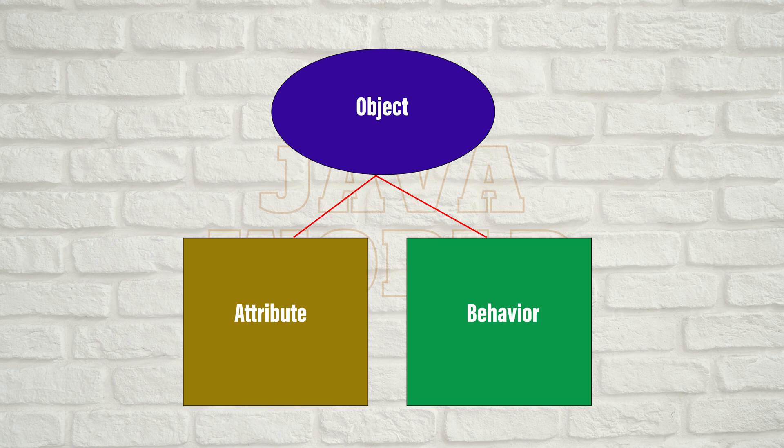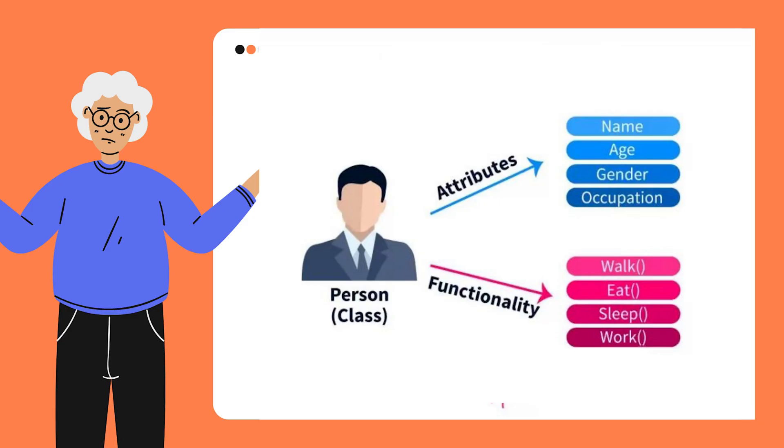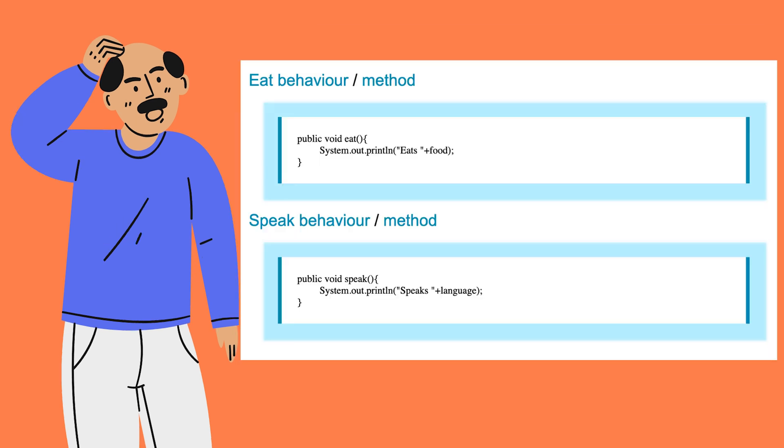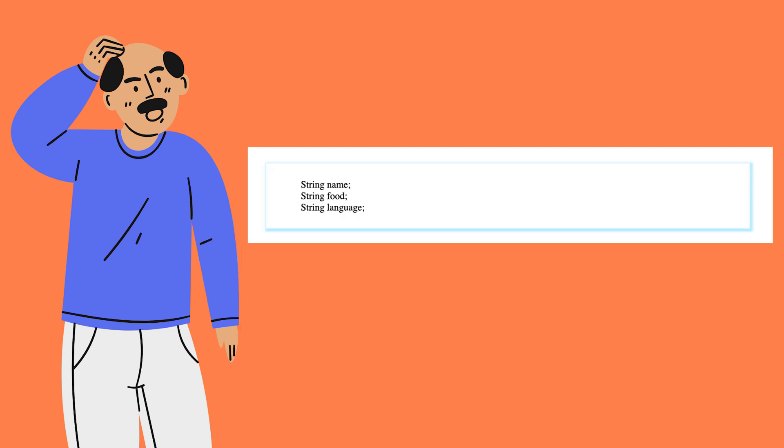The first is an attribute and the second is a behavior. For example, we humans have various names, foods and languages. These are attributes. At the same time, we all have common behaviors, such as eating, speaking, etc. In the computer world, we will refer to behavior as methods. Attributes will refer to as data. So the object is a combination of both data and methods.